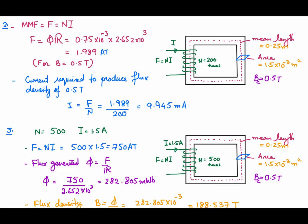The MMF — the product of number of turns and current — is given by F = flux × reluctance, analogous to Ohm's law V = IR. There is a one-to-one relationship between magnetic and electrical Ohm's laws: flux is analogous to current, reluctance to resistance, and MMF to voltage.